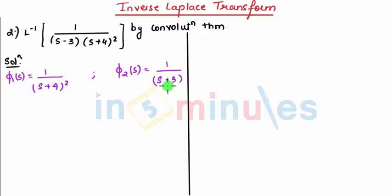Now understand one thing. You can swap the functions also but when I change it and put it in a formula of convolution, phi 1 of s changes to f 1 of t and f 1 of t changes to f 1 of u. So if I take a bigger function in phi 1 of s we just need to replace t by u.